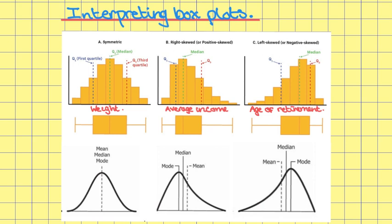For a left skewed or negatively skewed distribution, most of our data points are to the right of the histogram. If you draw the curve, it's easily seen that most of the data points are over here to the right. The median is in the middle, the mode is to the right of the median, and the mean is to the left of the median.